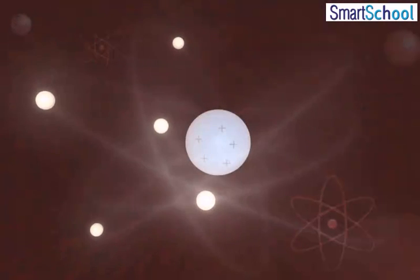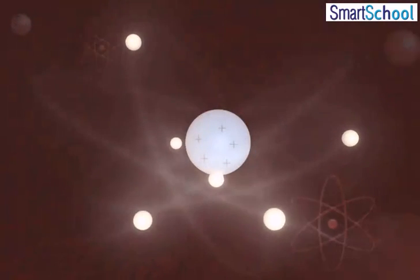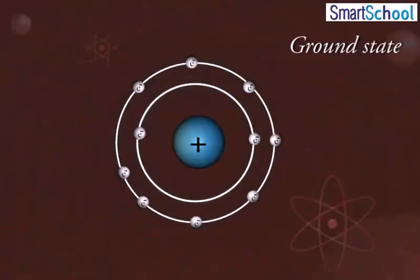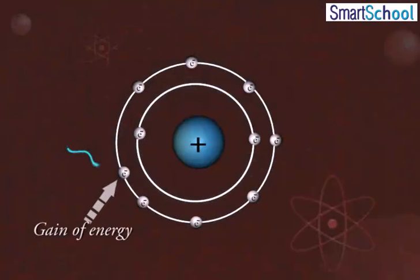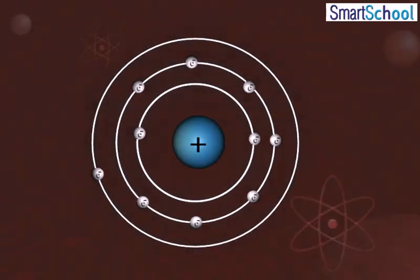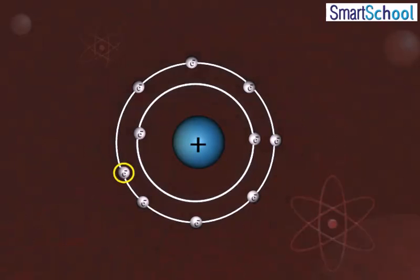The state of an atom with lowest energy is known as the ground state. Energy is gained or lost by an electron when it jumps from one orbit to another.